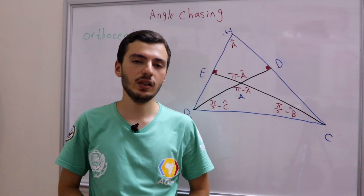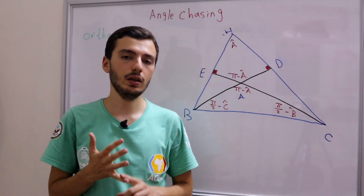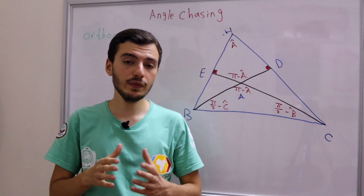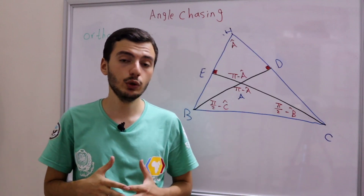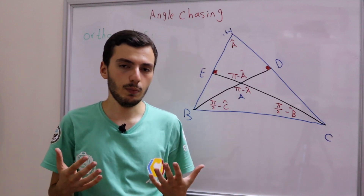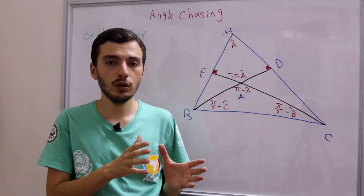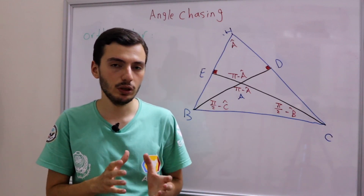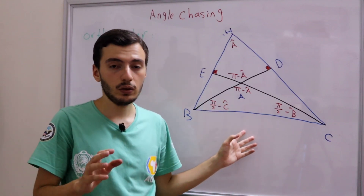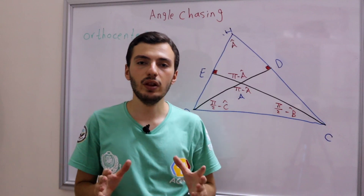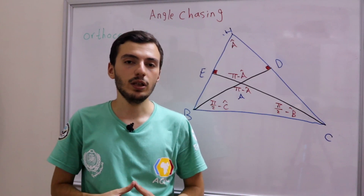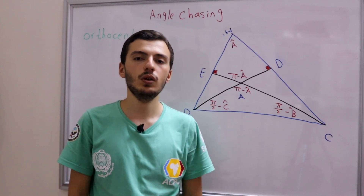We've now discussed all three centers of the triangle: the circumcenter, the incenter, and the orthocenter, and we know all the angles related to them. In the next videos we'll discuss much more interesting properties, relating these three points and finding nice properties for each center. Since we now know all the angles, everything from here will be really easy. I hope you enjoyed these videos — please like, share, and subscribe, and see you in the next video.